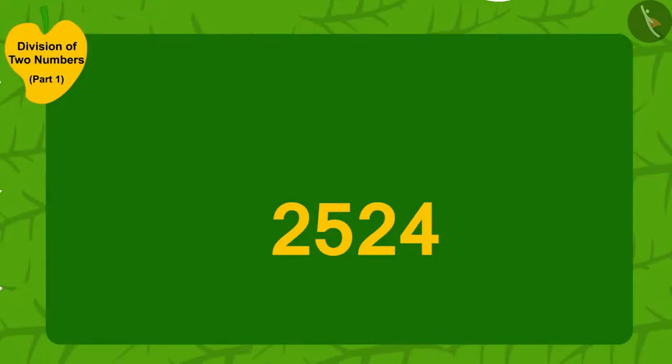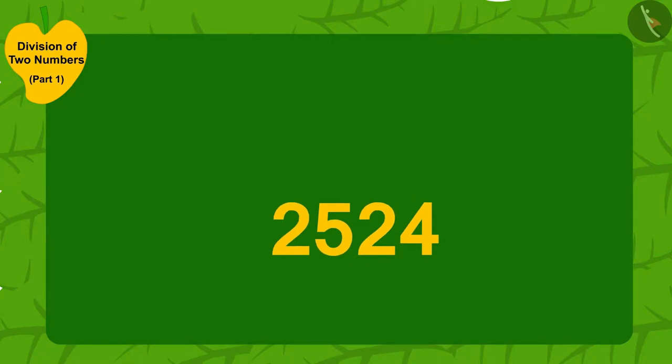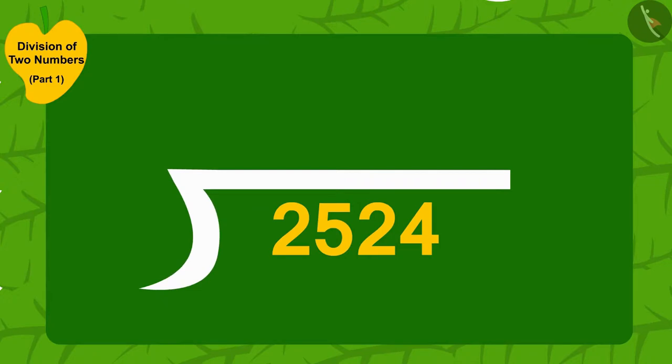Children, if Barbole Uncle had 2,524 mangoes, could you use the same process of division Uncle learned now to find out how many villagers would he be able to distribute four mangoes each to?